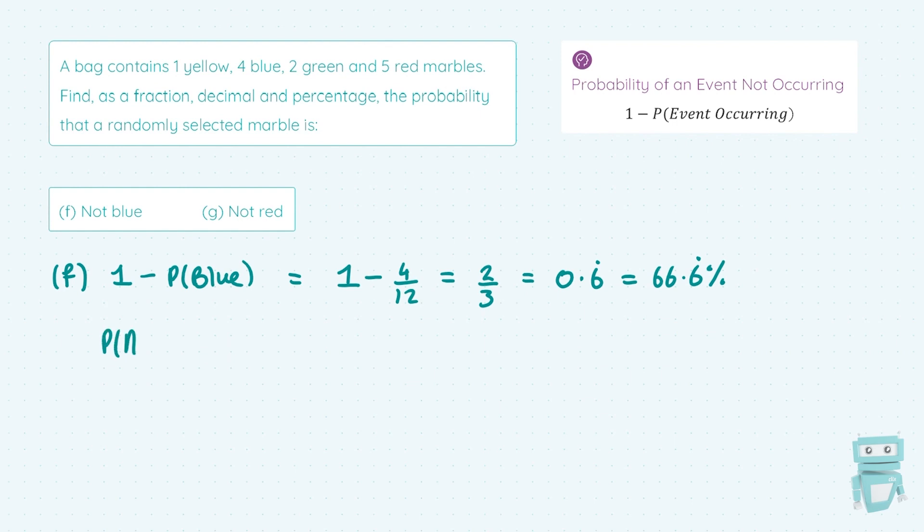Another way you could think about it to get the probability of a not blue is you could add up all the other colours that aren't blue. So the yellow, which would have a probability of 1 over 12, plus the green, which has a probability of 2 over 12, plus the red, which has a probability of 5 over 12. And that gives me two-thirds when I add those. And so we get the exact same answer as above. I think the 1 minus the probability of the event occurring is a little quicker, so I'll usually go with it that way.